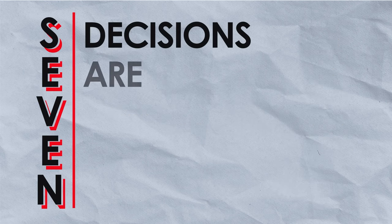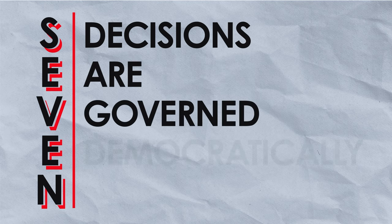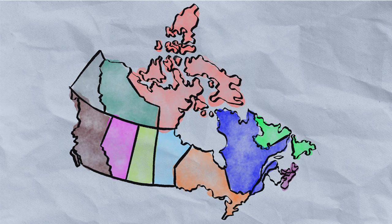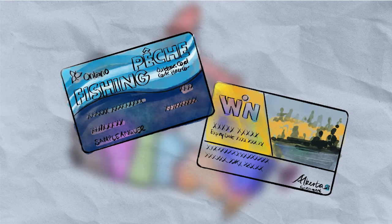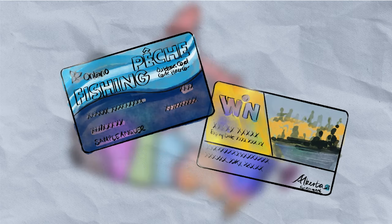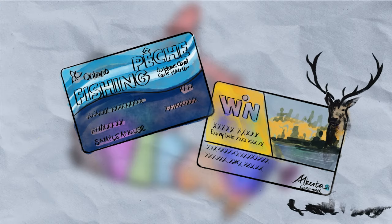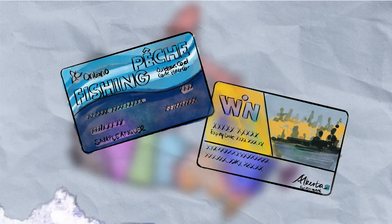Seven: decisions are governed democratically. Every Canadian has an opportunity under the law to fish in Canada. Provincial and territorial agencies and law enforcement are funded by fishing license revenues and related taxes.